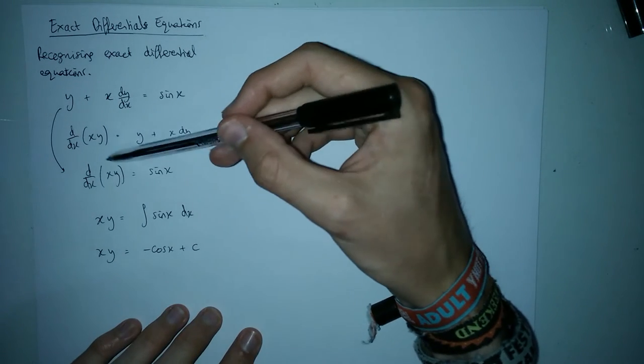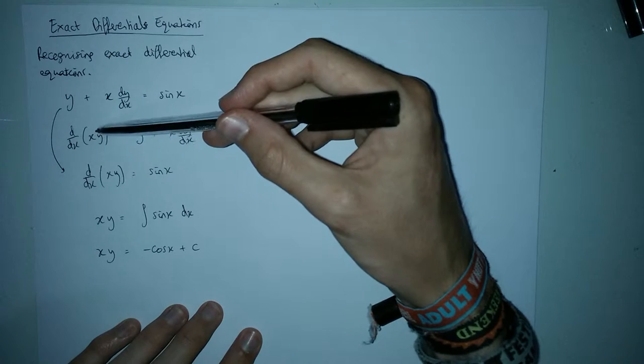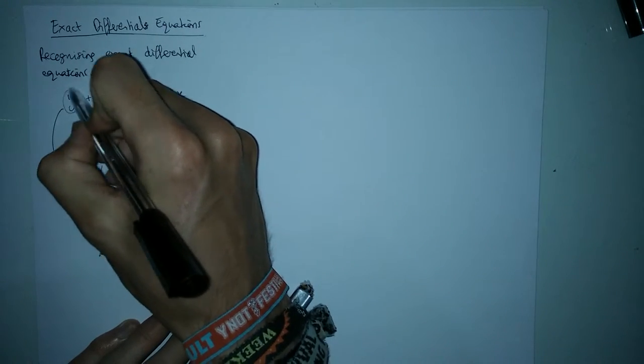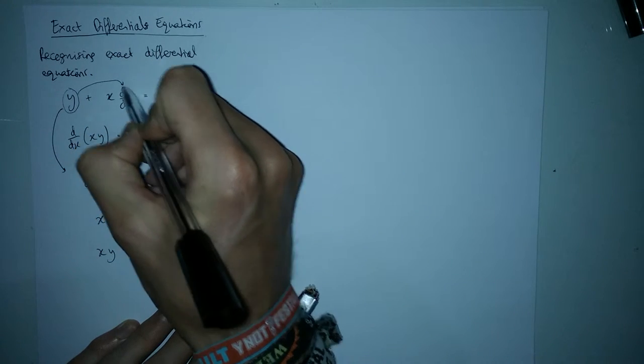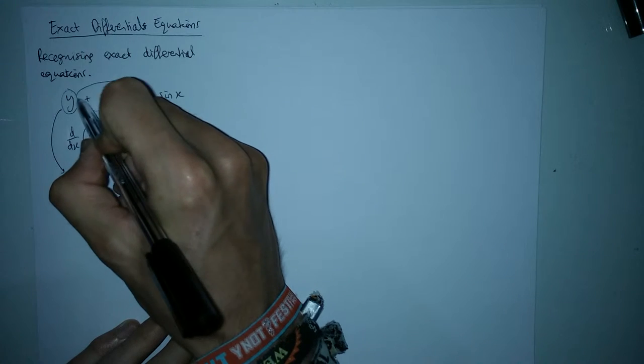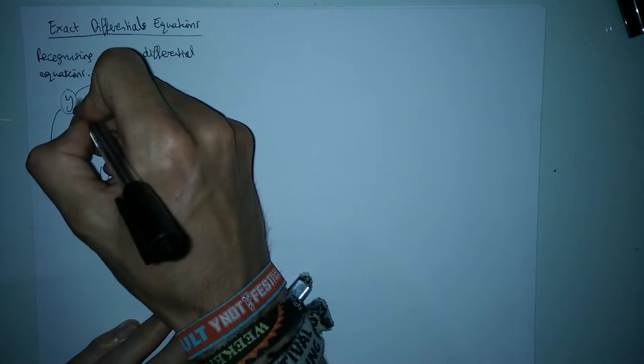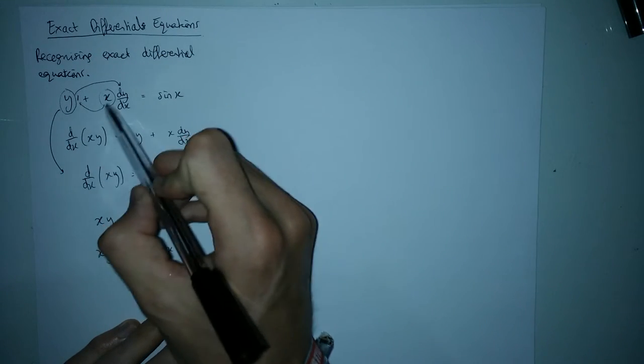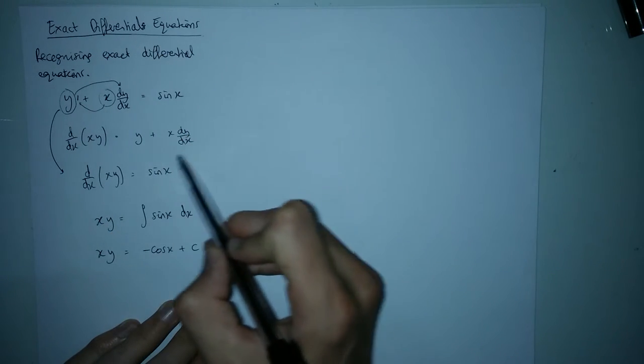And the reason I know that this is the product that differentiates to this is by looking up here and recognizing that this y differentiates to give this dy dx and this x differentiates to give this one that you can't see because ones are always invisible. And that means that that x and that y times together will give me the right answer.